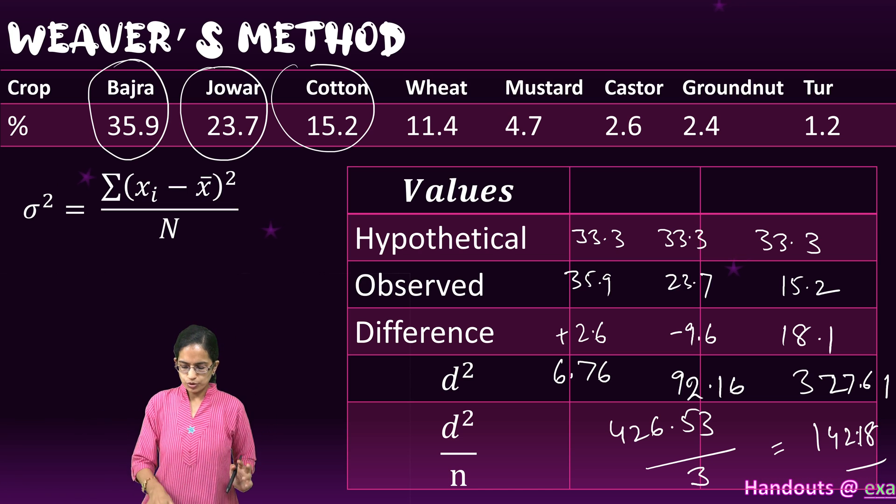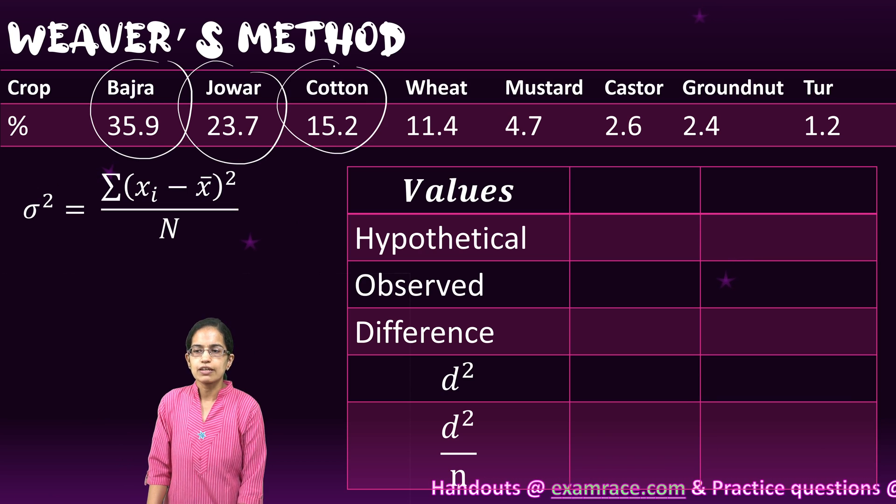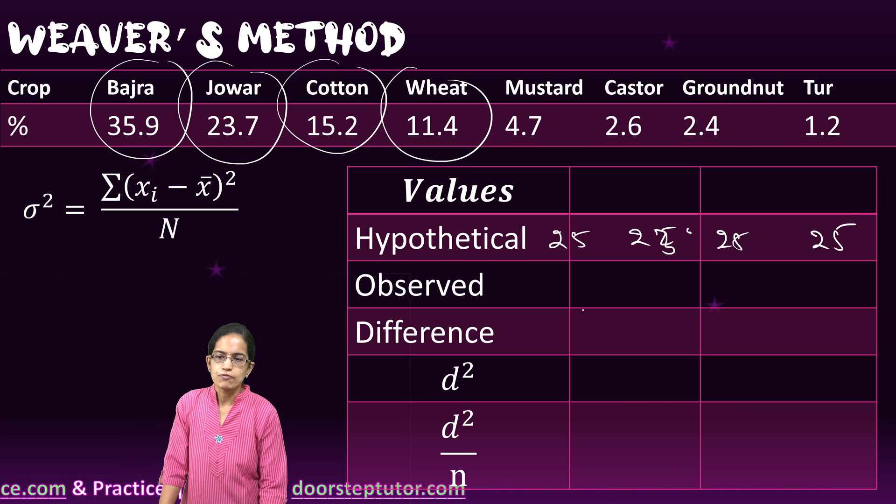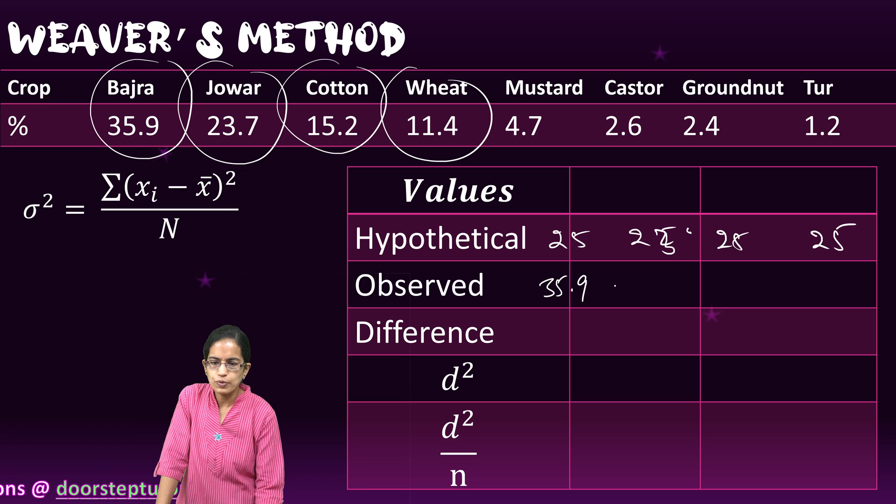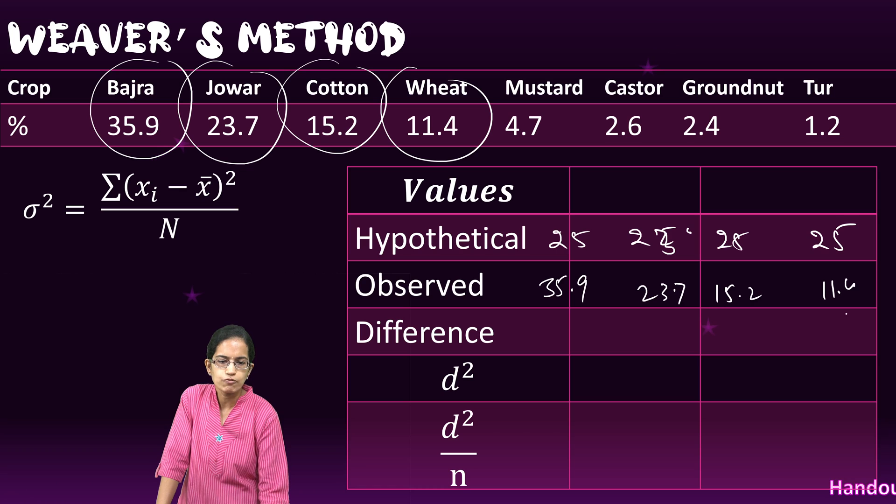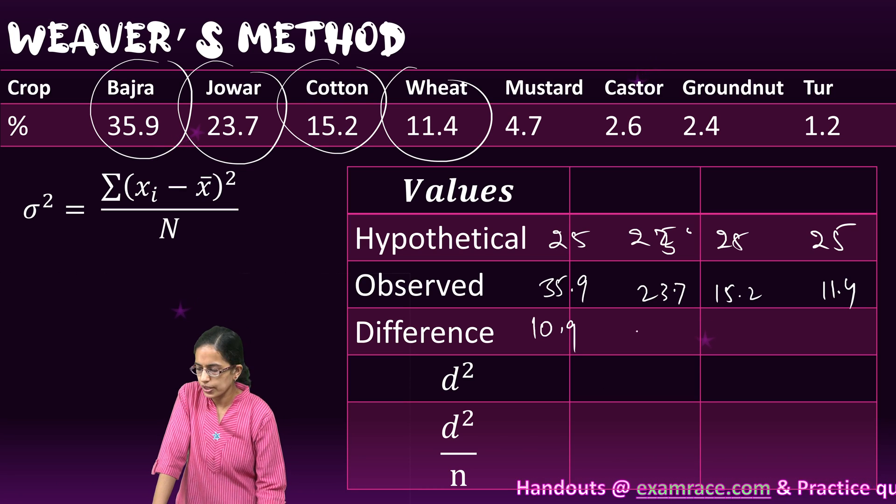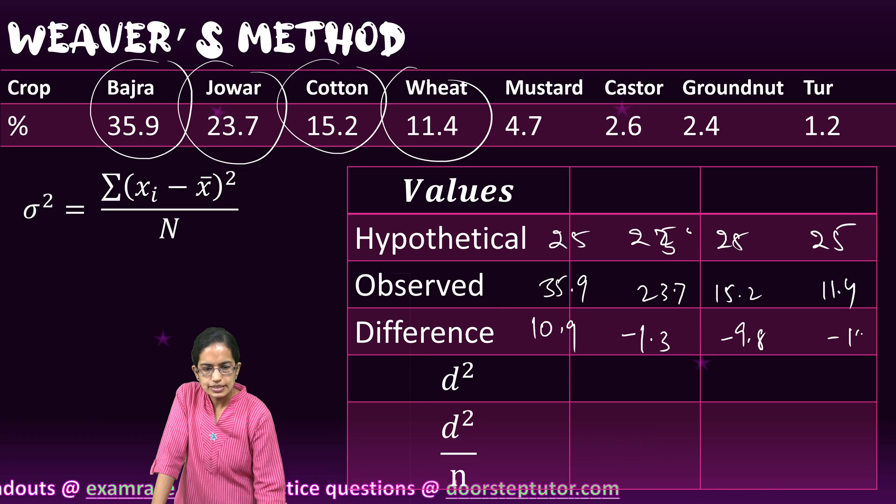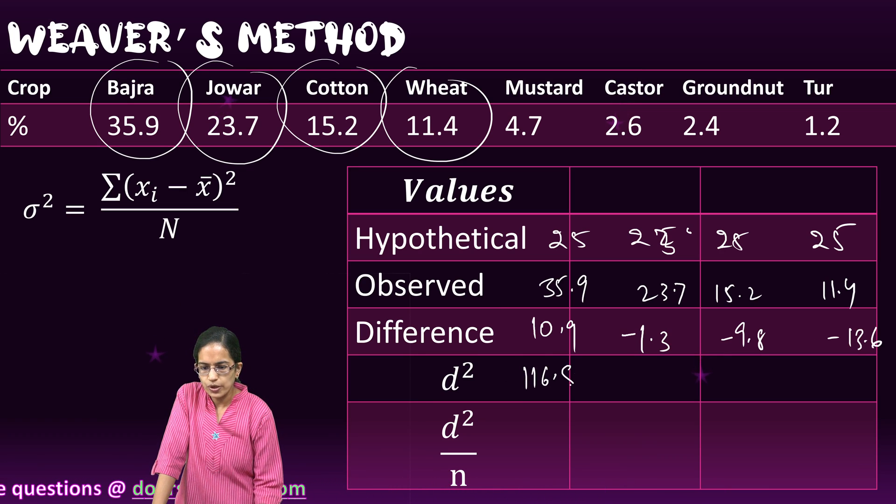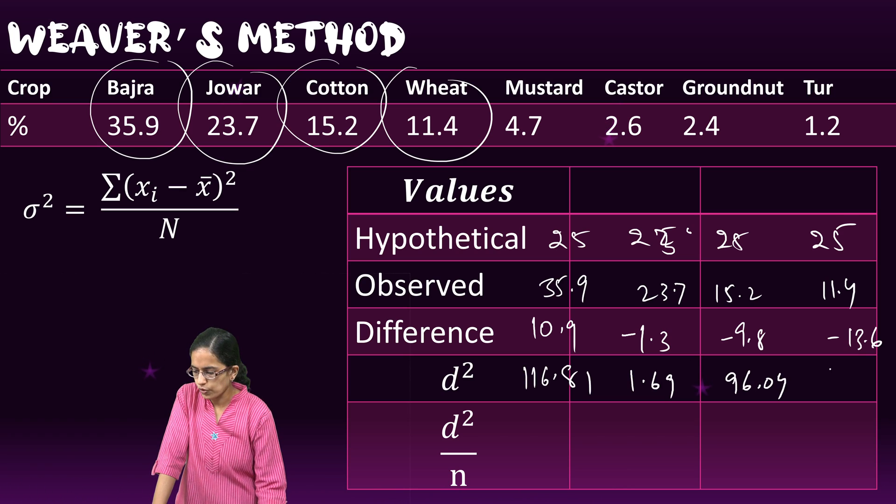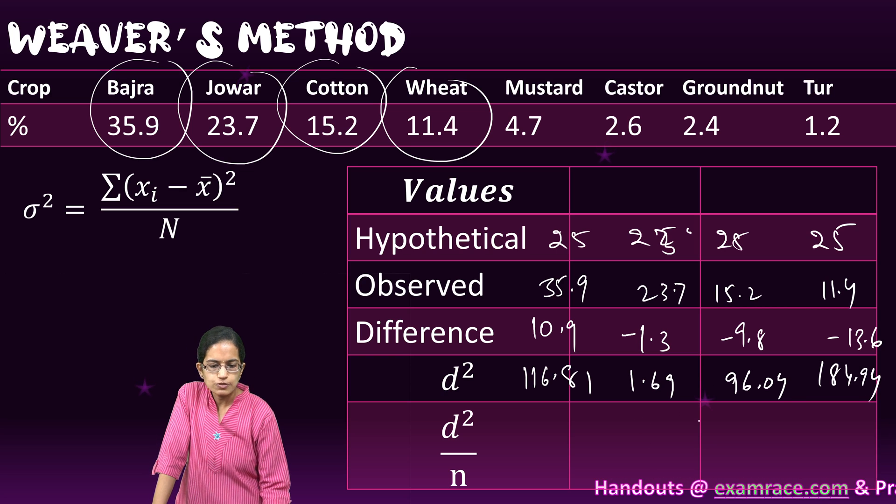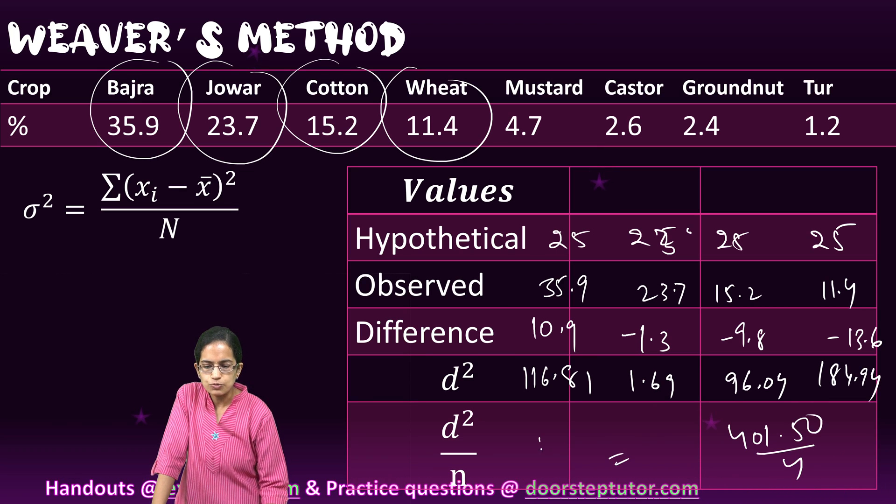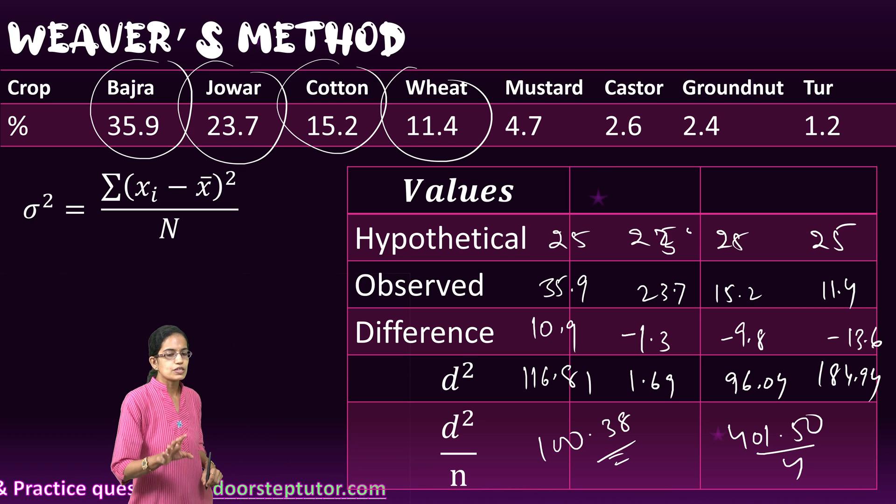This is when there were 3 crops. Now I take 4 crops. My hypothetical values are 25, 25, 25, and 25. My actual values are 35.9, 23.7, 15.2, and 11.4. I take the difference again. Those come as 10.9, minus 1.3, minus 9.8, and minus 13.6. I square these values as 106.81, 1.69, 96.04, and 184.94. I add these values. The summation of d² is 401.50 divided by 4, which lands up to 100.38. This is my value with 4 crops.